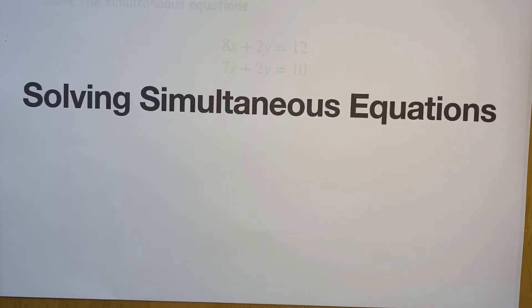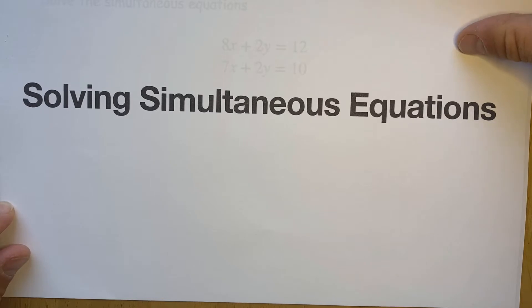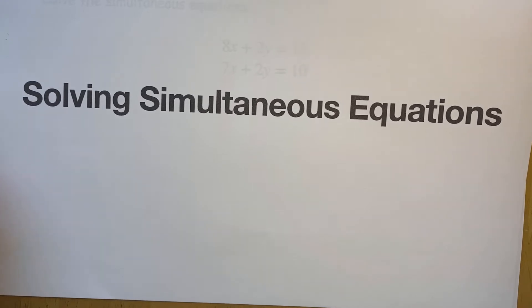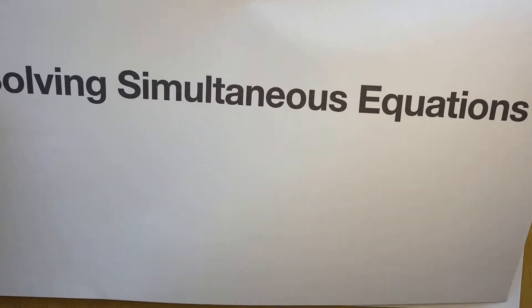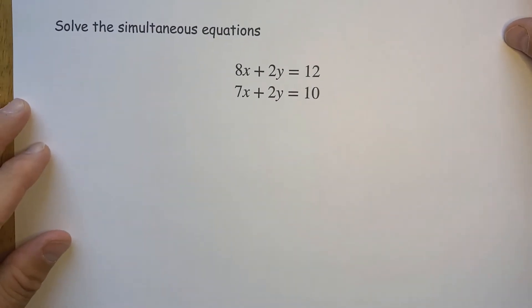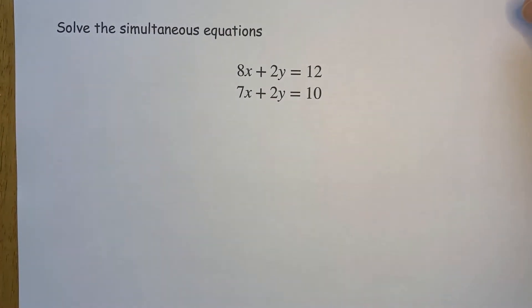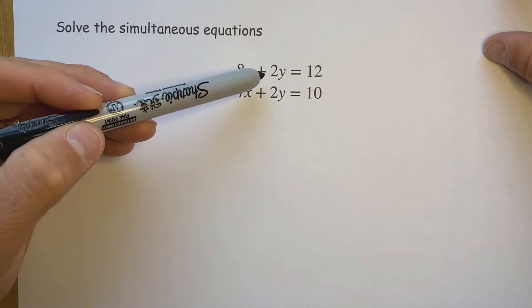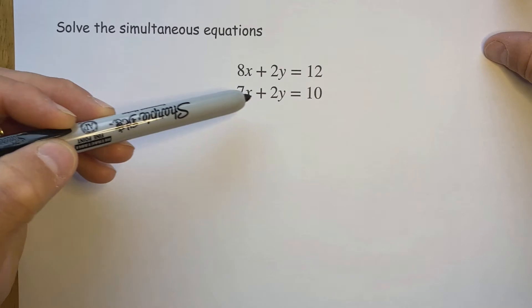Okay, second lesson on solving simultaneous equations. In the last set of examples we looked at adding equations together in order to eliminate the letter y. In this series of examples, we cannot eliminate y by using the same approach because if I add these together positive 2y plus 2y would make 4y.